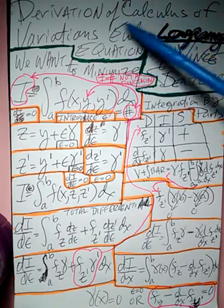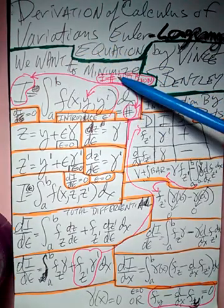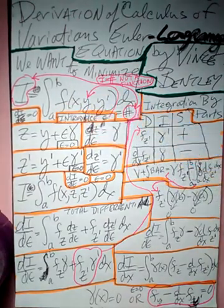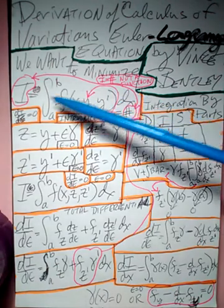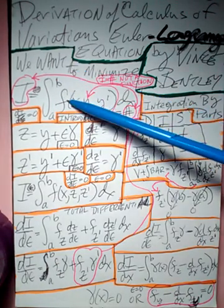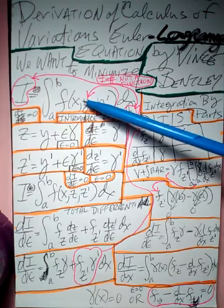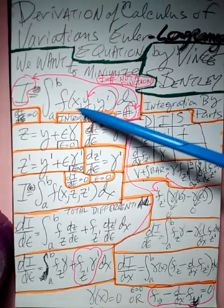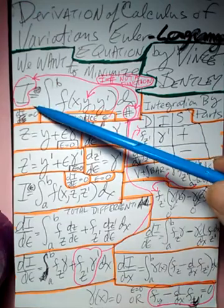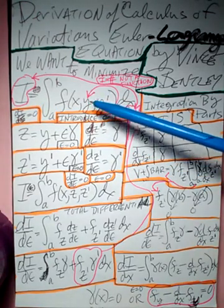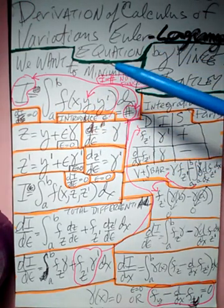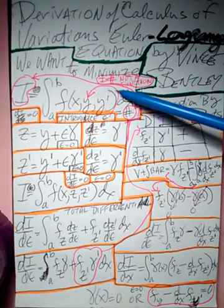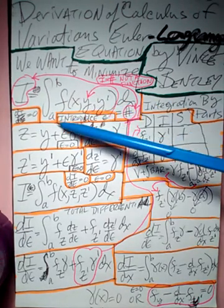The calculus of variations is concerned with minimizing the value of an integral — the integral from a to b of a function f of x, y, and y prime, dx. The first problem is that if you want to minimize something in calculus, you take the derivative, set it equal to zero, and solve. But this integral theoretically has no variables because it goes from a to b — it evaluates to a number.